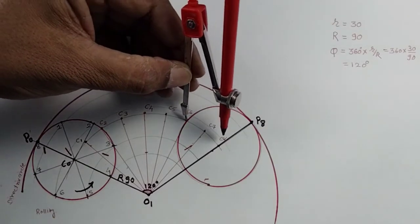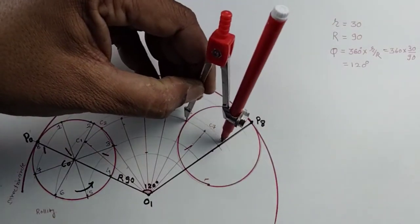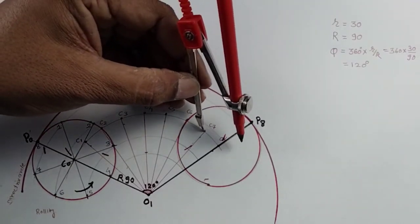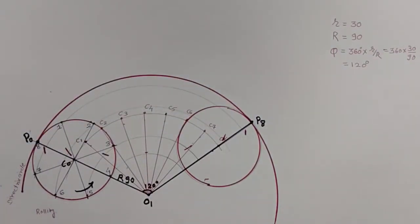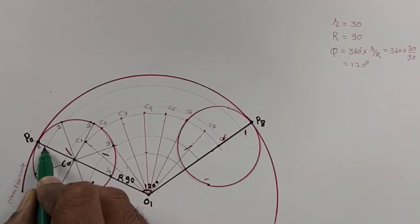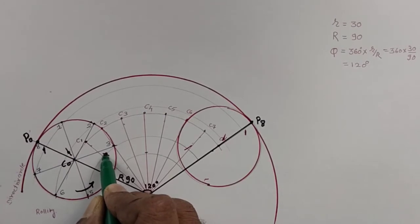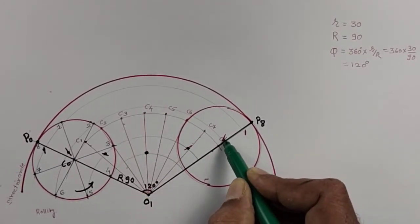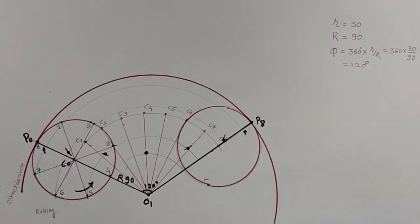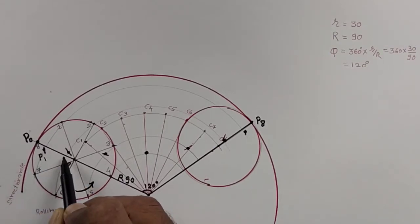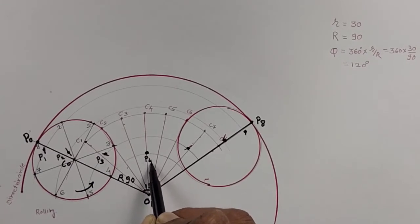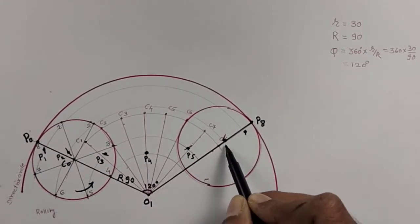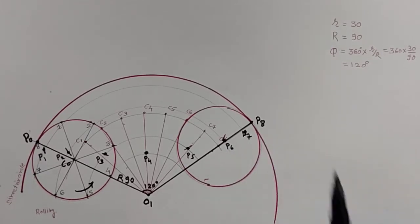After the half revolution, the P point is on the right-hand side, so I change the direction of the arc. I draw the arc on the fifth circle with C5 as center. Then with C6 center, I draw the arc on the sixth circle. Then with C7 center, I draw the arc on the seventh circle. Now you can get all the points. We mark them clearly and number them: P1, P2, P3, P4, P5, P6, P7, and P8.